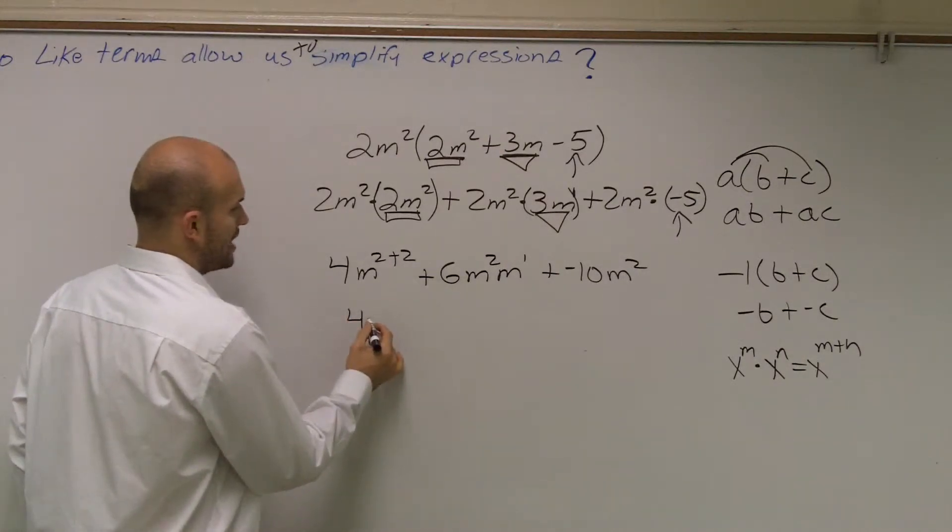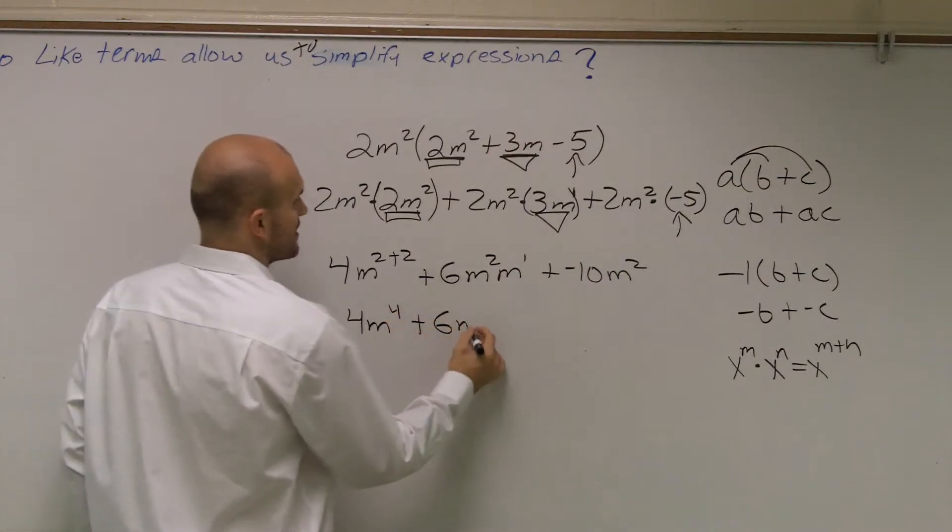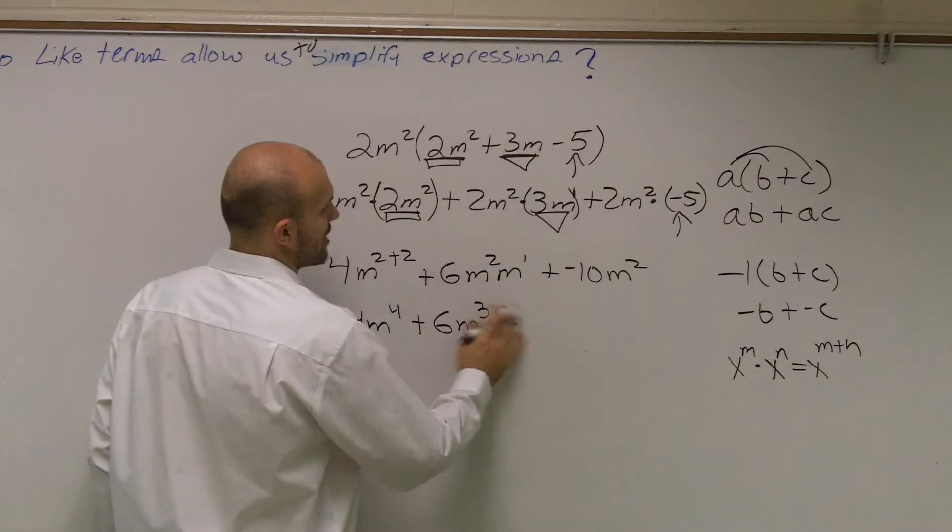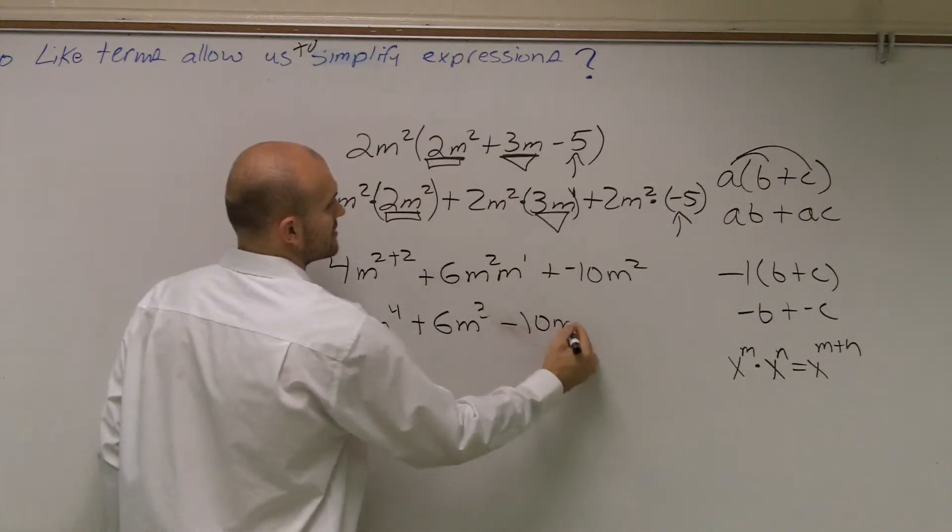So finally, it's going to be 4m to the fourth plus 6m cubed plus, actually, instead of a plus and negative, we could just write it as subtract 10m squared.